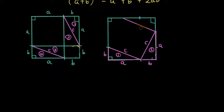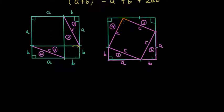This is triangle three, with side C. And then I'm going to paste triangle number four with side C. You can see what we have ended up with is a big square in the middle where the length of each side is C.